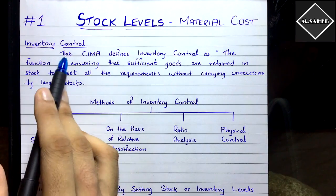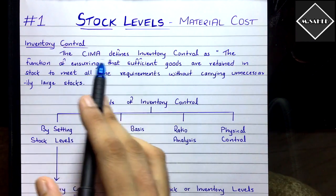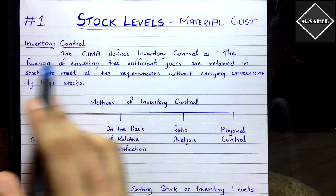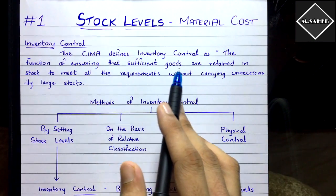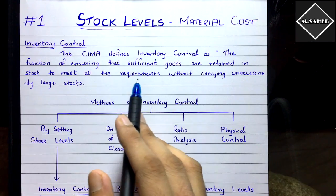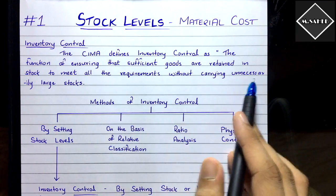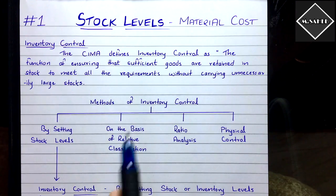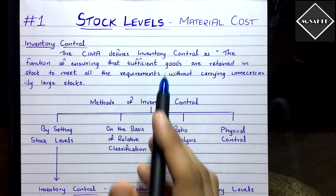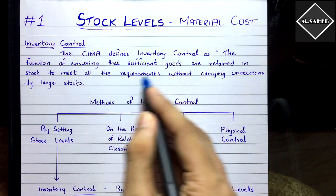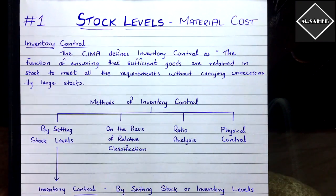The CIMA defines inventory control as the function of ensuring that sufficient goods are retained in stock to meet all requirements without carrying unnecessarily large stocks. The basic goal of inventory control is to maintain a balance between sufficient stock and overstock.